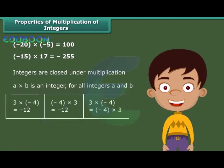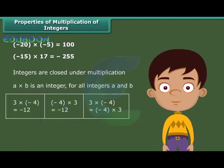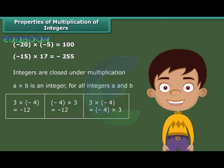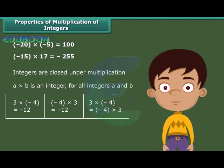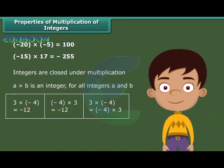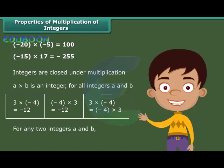Now observe this example. We can say that 3 into minus 4 is equal to minus 4 into 3. Therefore, multiplication is commutative for integers. In general, for any two integers a and b, a into b is equal to b into a.